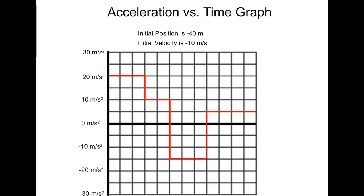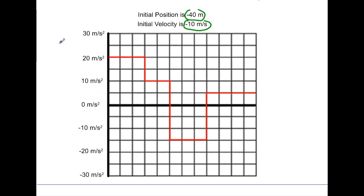In this example I have an initial position of negative 40 meters, and I have an initial velocity of negative 10 meters per second. We're going to start drawing the velocity versus time graph. Here I have my acceleration, so what you want to do on these is to find out what the area is under the curve.